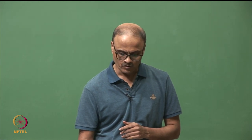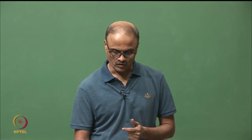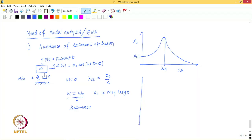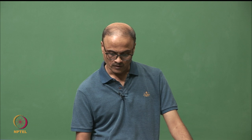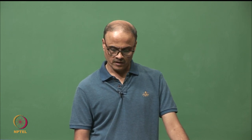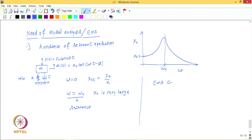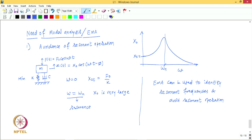Resonance can be avoided only when we know the natural frequency. If we know the excitation frequency and the natural frequency, we can figure out whether resonance is likely to occur. Therefore, to avoid resonance we must know the natural frequencies, and experimental modal analysis can be used to identify resonant frequencies and avoid resonant operation. This is one of the principal motivations for experimental modal analysis.